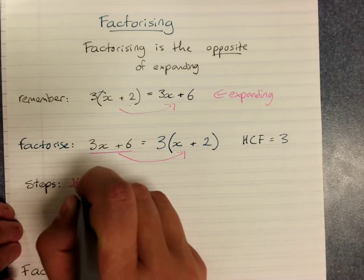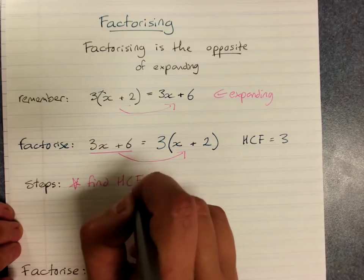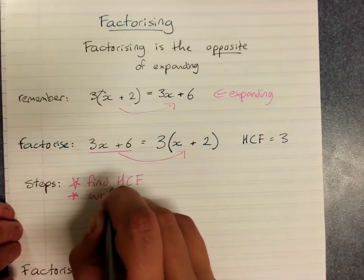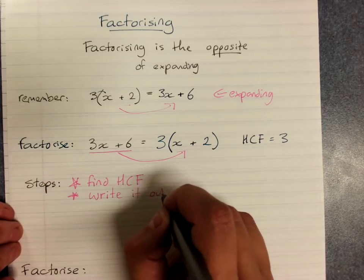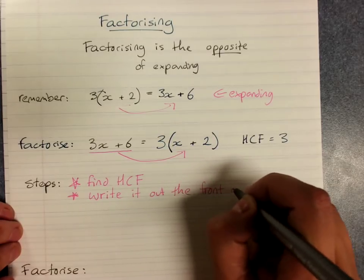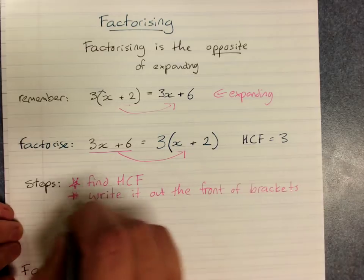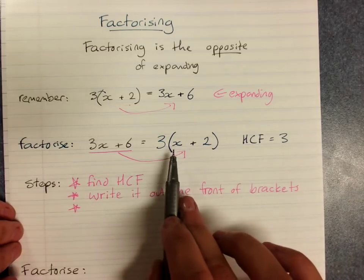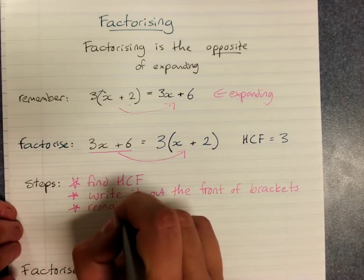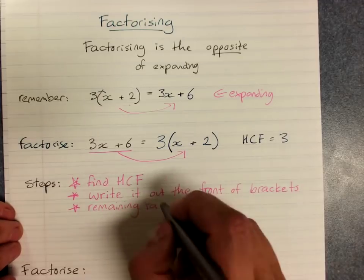So the steps are: find the highest common factor, write it out the front of the brackets. And the remaining factors are in the brackets. And that's why it's called factorizing, because we're taking out the highest common factor.